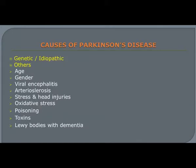Causes include genetic and idiopathic factors. Other factors include age — it is more common between ages 60 to 80 years. When signs and symptoms occur before the age of 50, it is labeled as early onset Parkinson's disease. It is associated with viral encephalitis, that is inflammation of the brain tissue due to viral infections such as HIV and HSV.